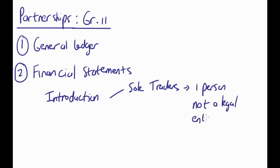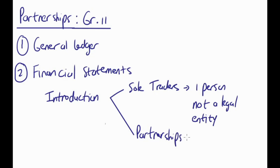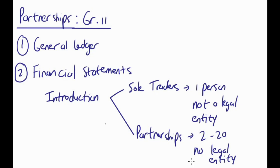What do we mean by not a legal entity? The main thing is that the sole trader doesn't really pay tax. At the end of the financial year, all that happens is that your net profit closes off to your capital account. Whereas with a partnership, which we do in Grade 11, you have 2 to 20 people, and normally there's also no legal entity. But each partner is responsible for their own taxation. Everything that has to do with a partner needs to eventually go to their current accounts.